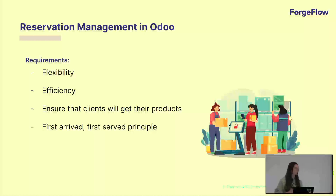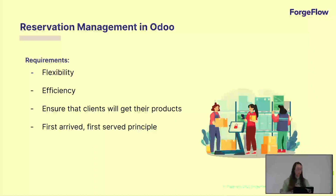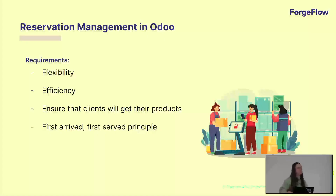Also, an efficient system is very important to ensure cost-effective and smooth operations. Efficiency means minimizing the processing times, minimizing the distance that operators have to walk inside the warehouse to take their products, placing products efficiently inside the warehouse, and minimizing errors in picking and packing.